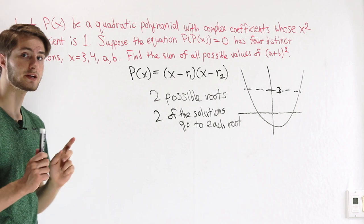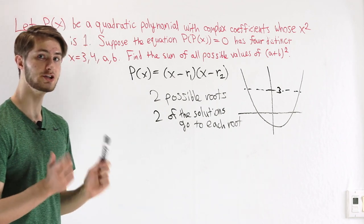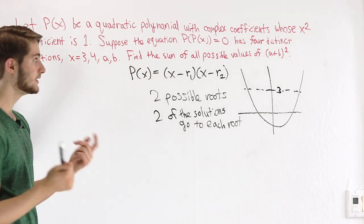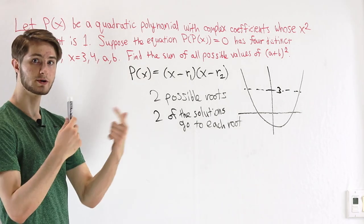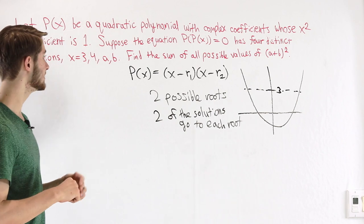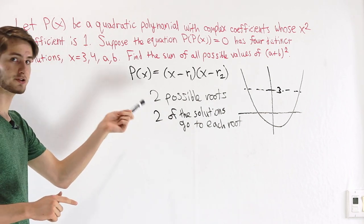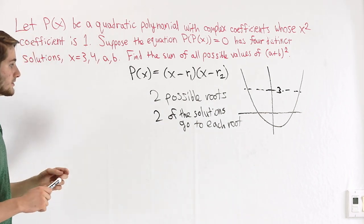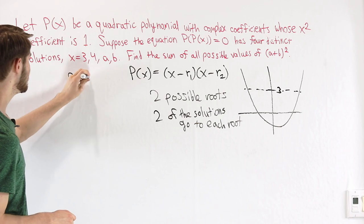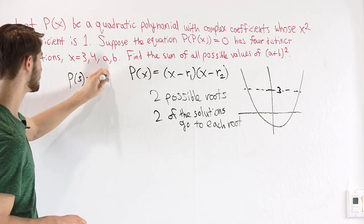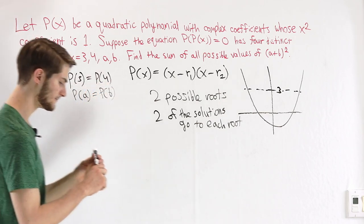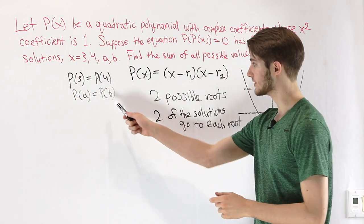With this, we can start doing computations to figure out the answer. The solutions are 3, 4, A, and B. A and B are pretty much interchangeable — they're just our unknown values. One possibility, if we want two of the solutions going to the same root, is that p of 3 equals p of 4, and then p of A equals p of B.